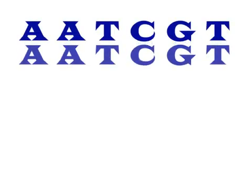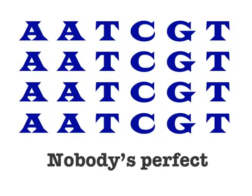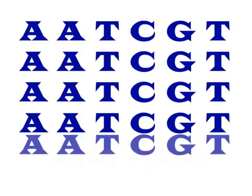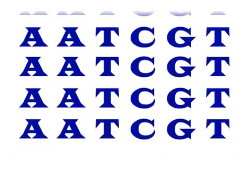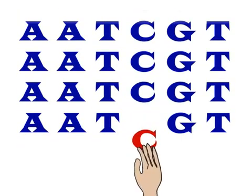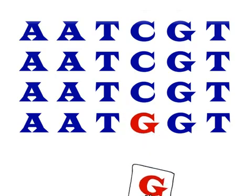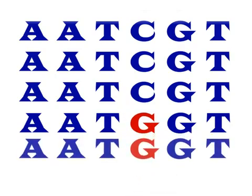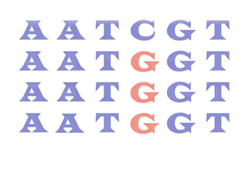When the body makes new cells, it doesn't make many mistakes. But nobody's perfect. Sometimes, when the genome is copied to make a new cell, a single base pair gets left out, added, or substituted. Single base pair substitutions create SNPs.